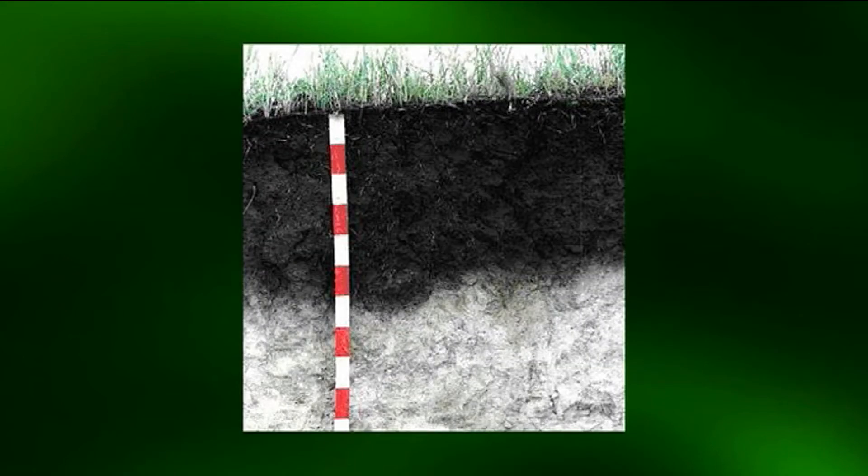The uppermost A horizon of a soil profile is darker in color than the lower horizons. This difference is due to the accumulation of organic matter that results from the decay of plant roots and other organic residues incorporated into upper soil layers. Also, weathering tends to be more intense in upper horizons than in the lower horizons. Some products of weathering have been leached out of these layers, which are collectively termed as A horizons.